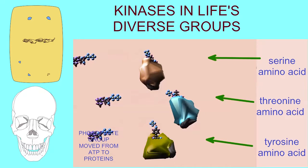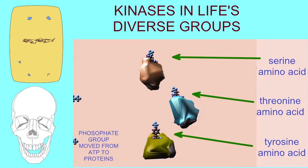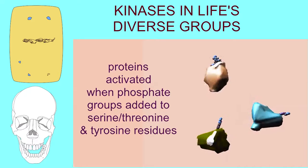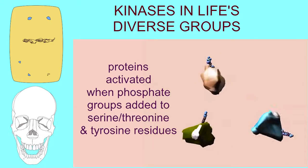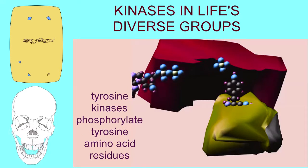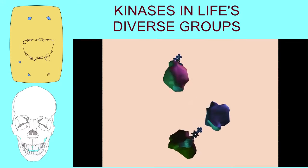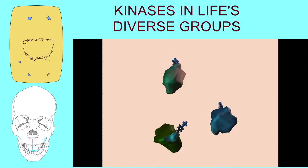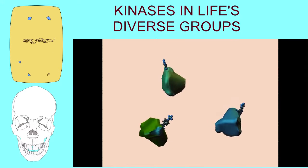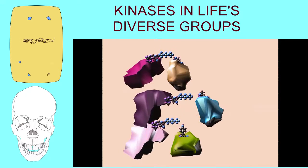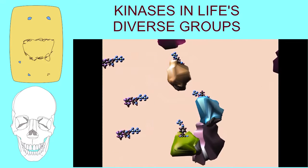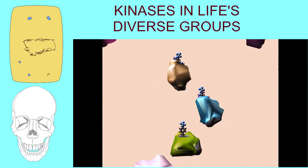In human cells, proteins can be activated by adding phosphate groups to specific amino acids. Enzymes known as kinases add these phosphate groups to amino acids and proteins. Bacteria can also activate proteins by adding phosphates to specific amino acids, and again, it is kinase enzymes which perform this task.